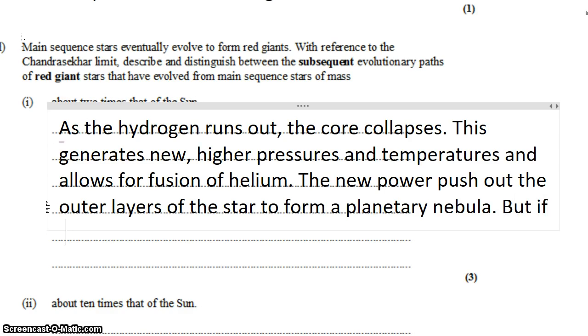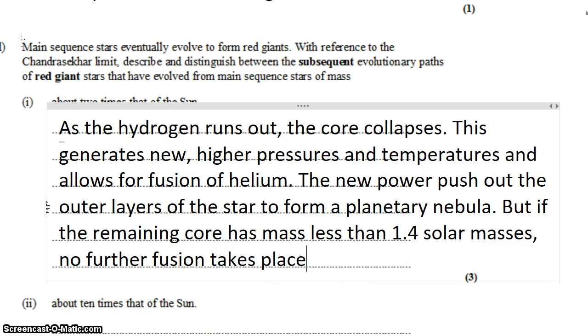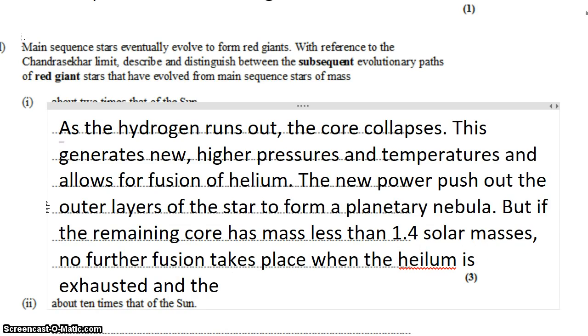So the core collapses and the outer layers expand. But if the remaining core has a mass less than 1.4 solar masses, that's the Chandrasekhar limit. No further fusion takes place when the helium is used up, and the star forms a white dwarf and slowly cools.